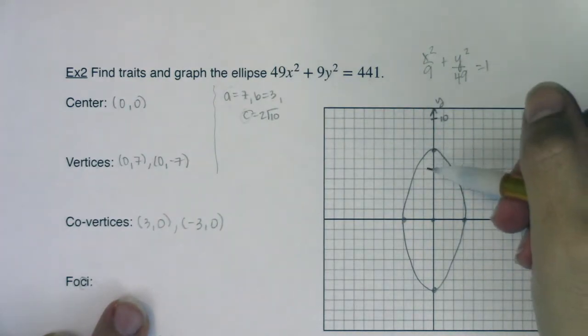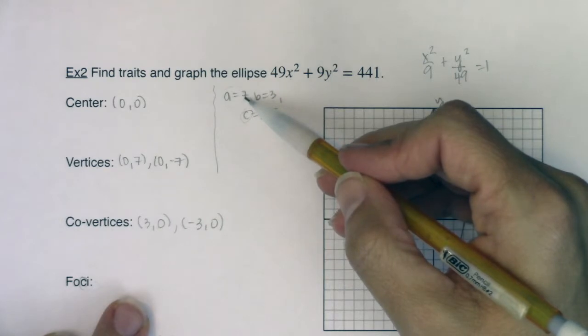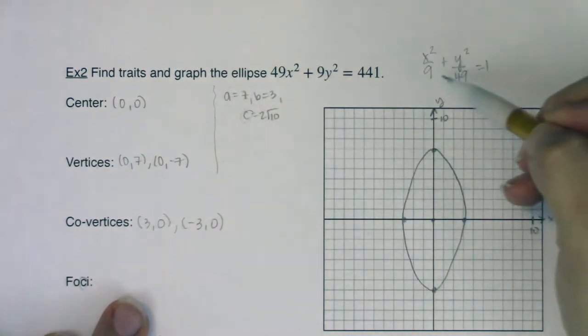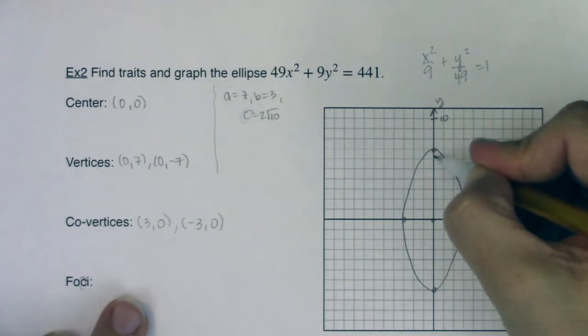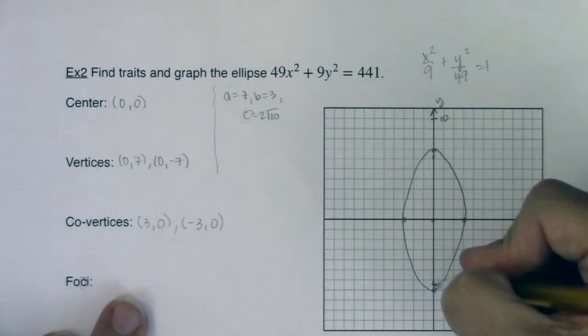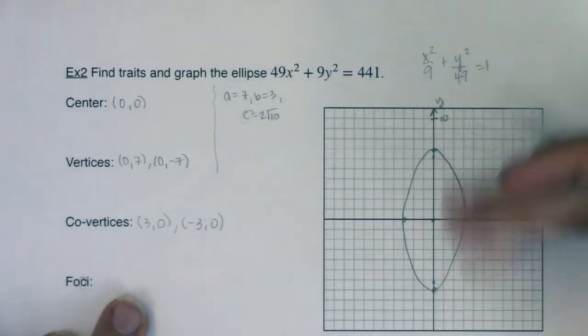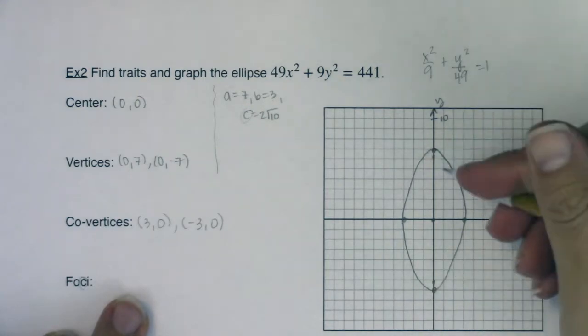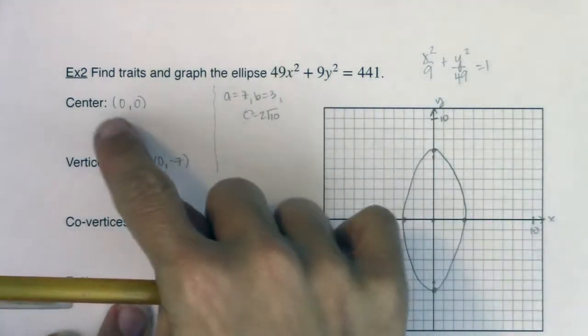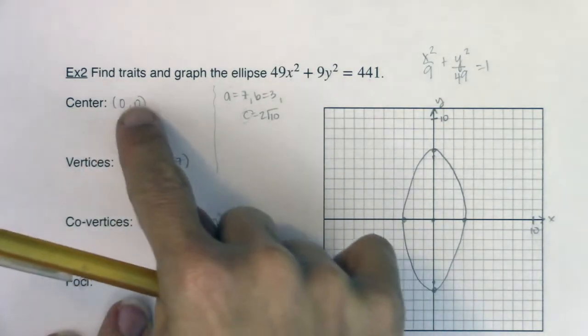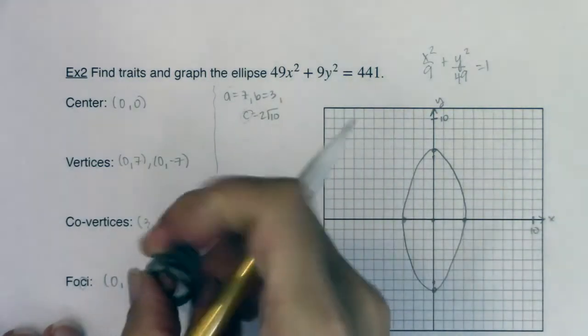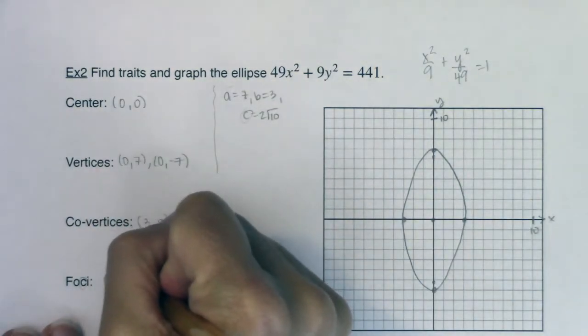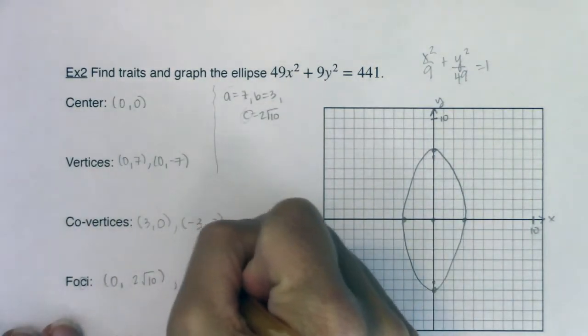Now your foci are always along the major axis, and my major axis is associated with the larger number, A, and A was under the Y, so my major axis is vertical. So I'm going to go C units up and C units down. And we had said C was about 6.3. So if I was at 6.3, it'd be like around here and around here. And your foci will always be pretty close to your vertices, but they're going to be along the major axis. But again, if I'm moving up and down, is that changing my X coordinate or my Y coordinate? Well, it's my Y coordinate. So my foci will be (0, 2 root 10) and then (0, -2 root 10).